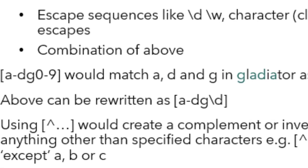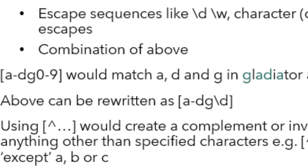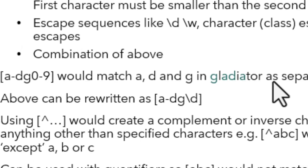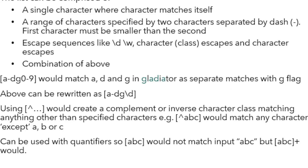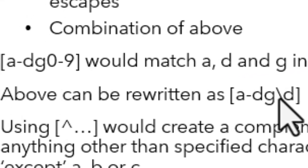For example, the character class a-d, g, 0-9 means anything in range a to d (letters a, b, c, d), or letter g, or any digit. If the input string is 'gladiator', it would match g (specified directly), and a and d (because of the range a to d). These would be separate individual matches with the global flag, since the character class matches a single character. Note that 0-9 can be substituted with its shorthand escape sequence backslash d, and both character classes would work exactly the same way.